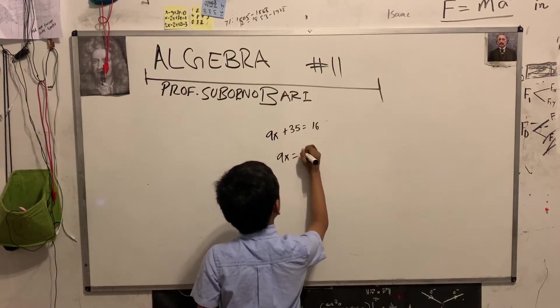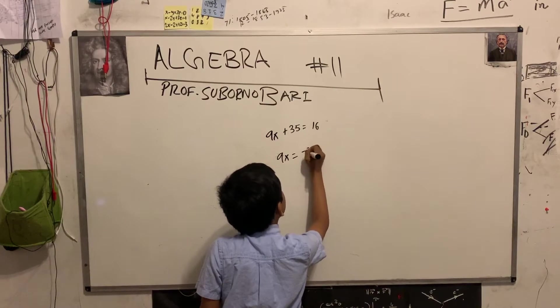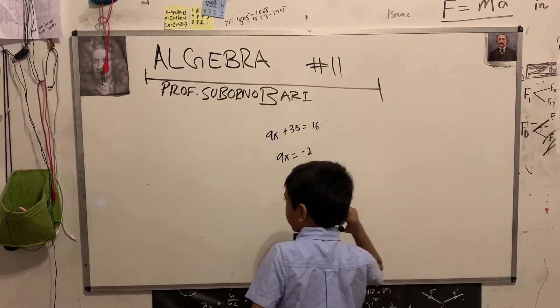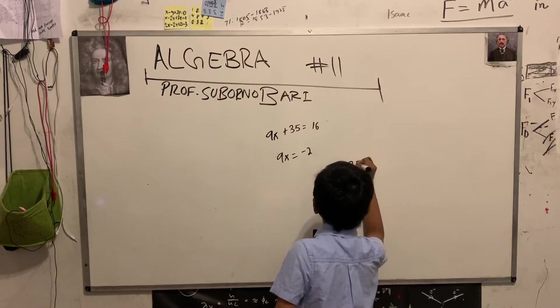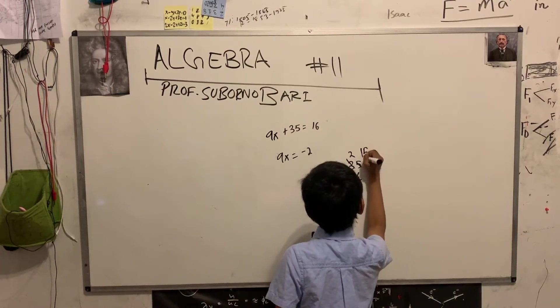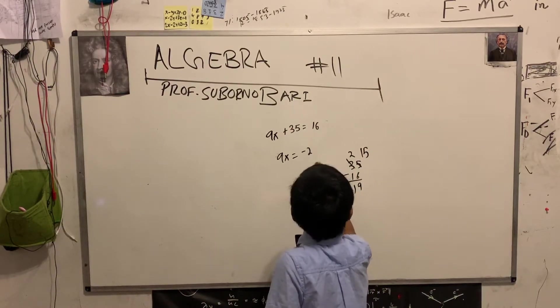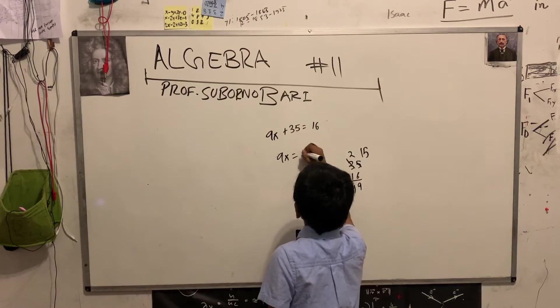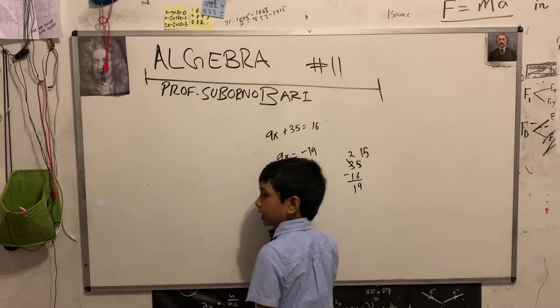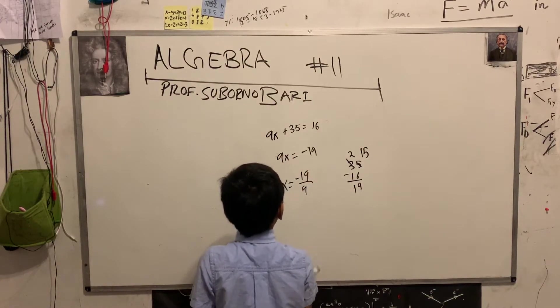9x equals to 16 minus 35 is going to be equal to negative 20. Okay, okay. Okay, 35 minus 16 first. I'm going to be 2, 15, 9, 1. Okay, so minus 19. So, 9x equals minus 19, meaning x equals minus 19 over 9.